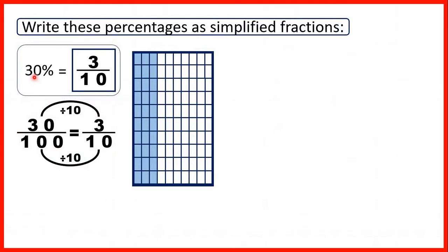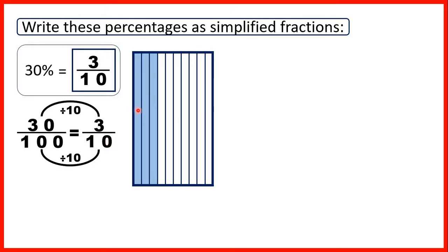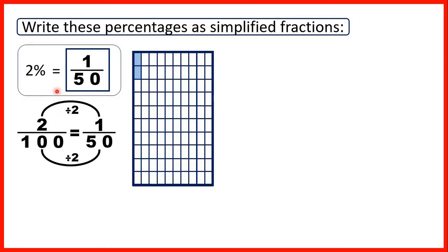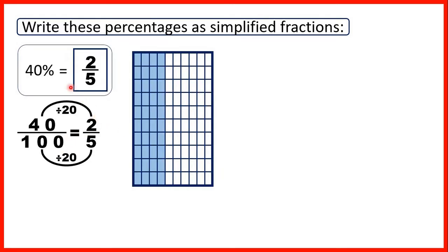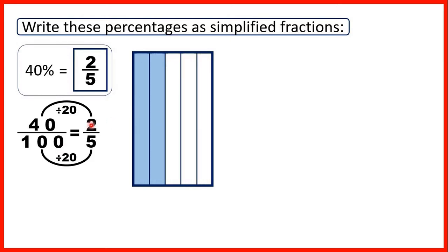Looking at this again: we knew that 30 percent meant 30 over 100, but we simplified that to 3 tenths. So as a fraction in its lowest terms, 30 percent is 3 tenths. By doing this we're not changing the amount of the fraction bar that's shaded, but we've simplified the fraction by using smaller numbers — the fraction isn't smaller, but the numbers are. Then we had 2 percent — 2 parts out of 100 — and 2 hundredths simplified to 1 fiftieth. Finally we had 40 percent — 40 parts out of 100 — which simplified to 2 fifths.